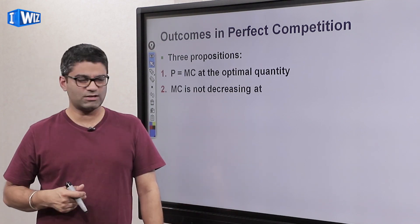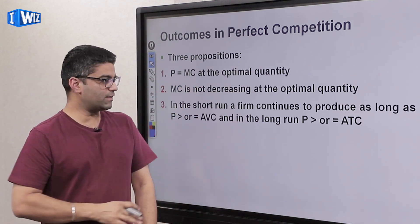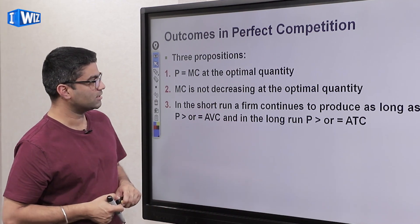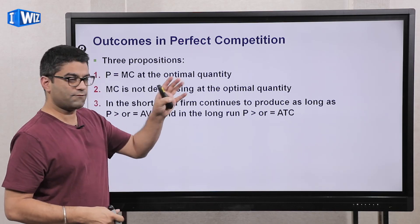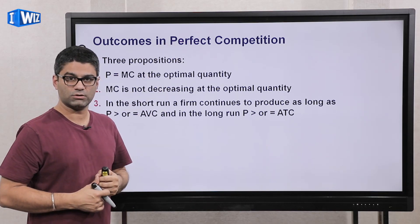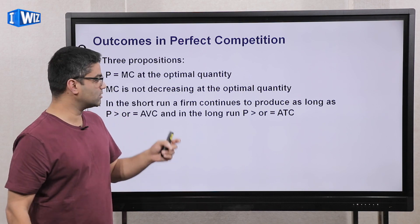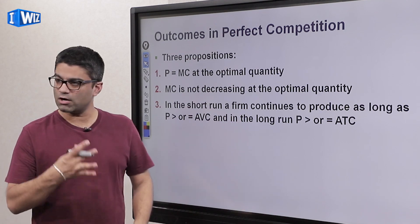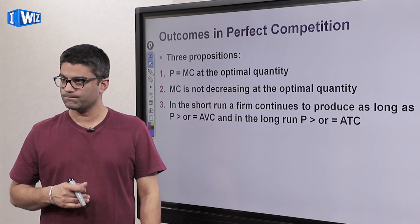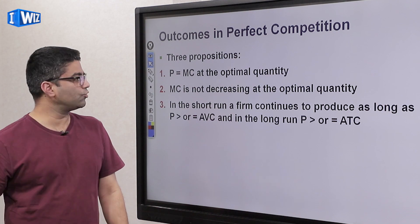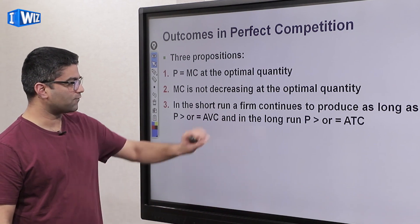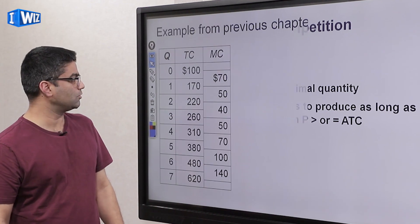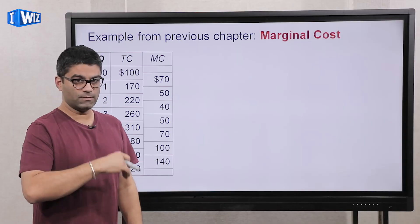I'm going to propose three propositions and we'll talk about the first two in this video and the third in the next video. The first proposition says price equals marginal cost at the optimal quantity in perfect competition. The second is that MC cannot be decreasing at that optimal quantity. I'll draw the graph and show both properties, and we'll get back to the third point in the next video.